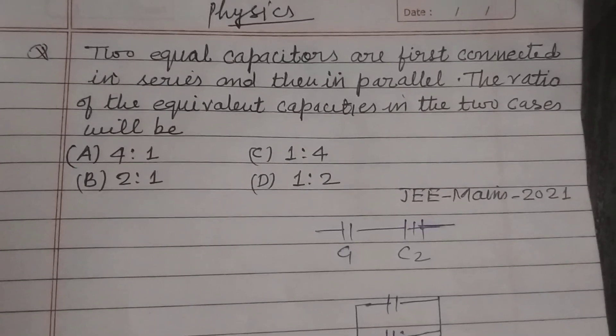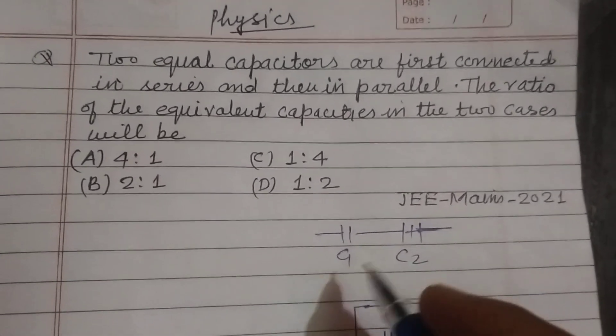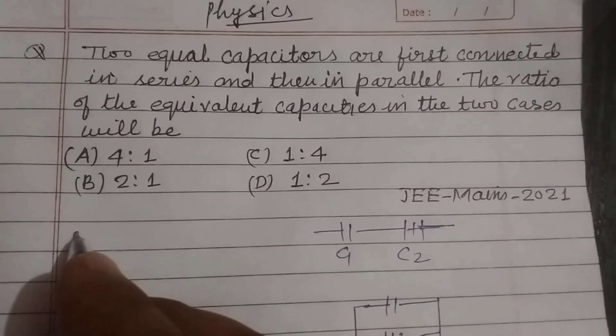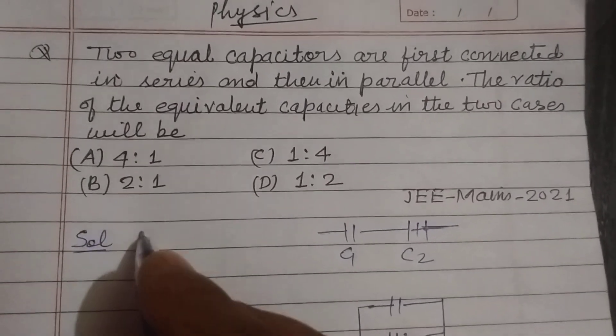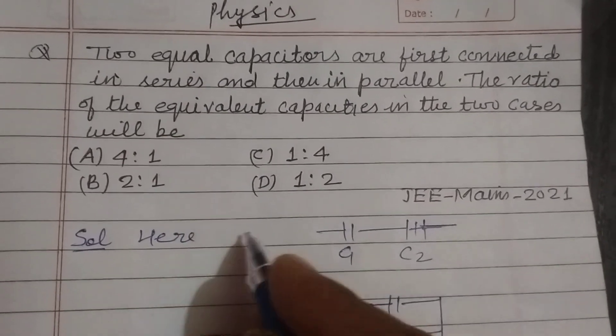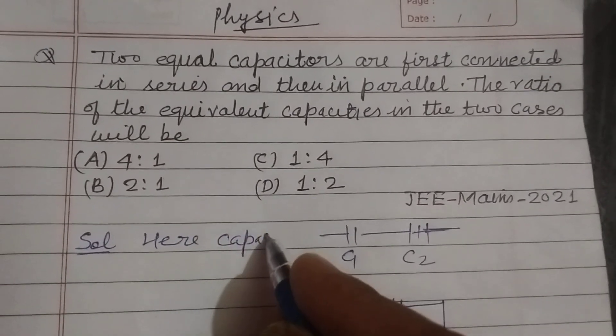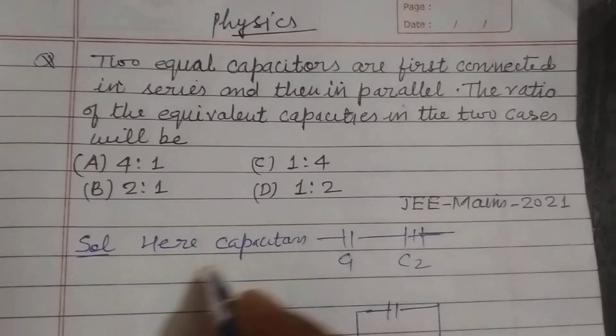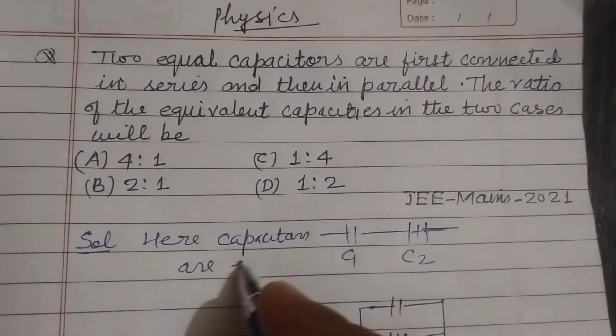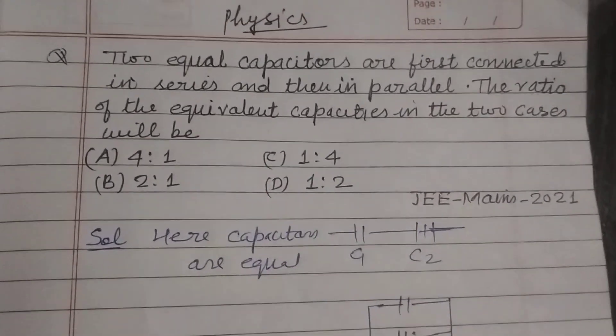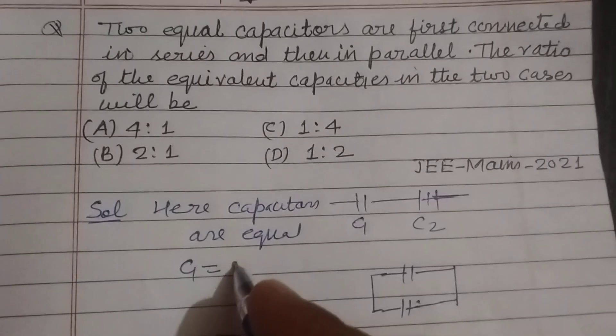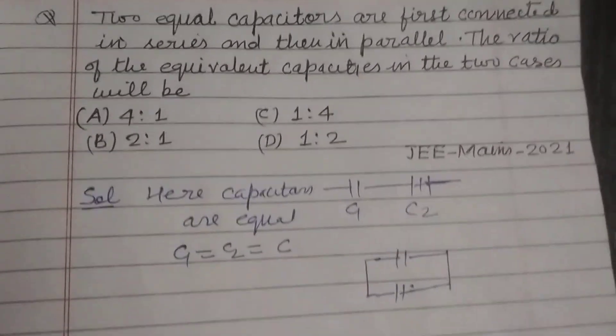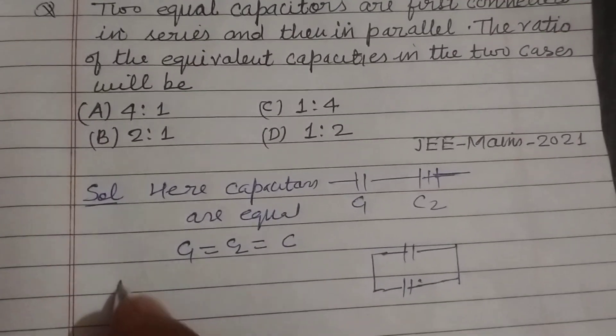So let here capacitors are equal, therefore C1 equals C2 equals C. In series combination, C equivalent equal to...